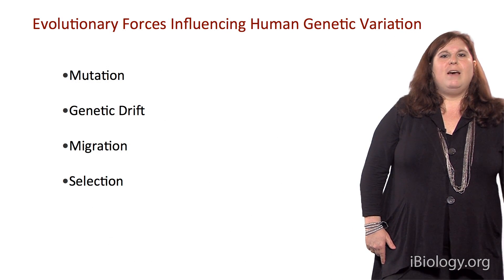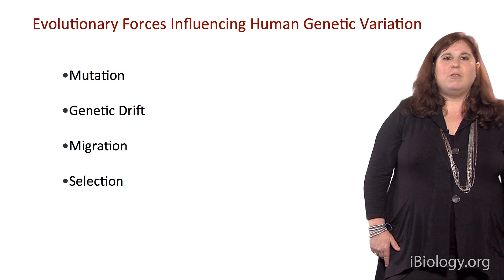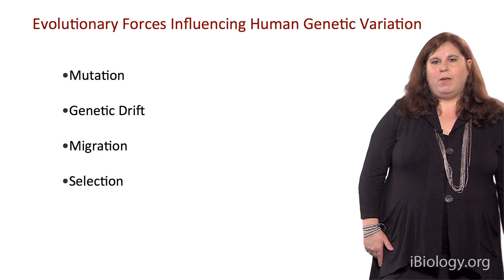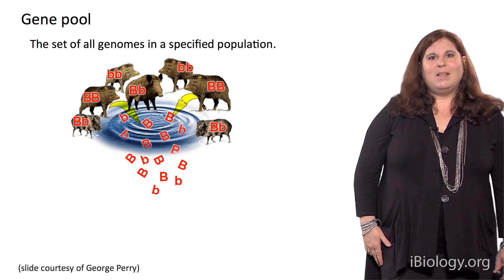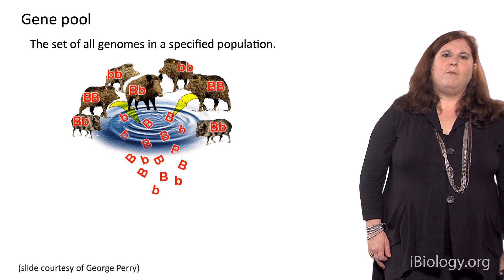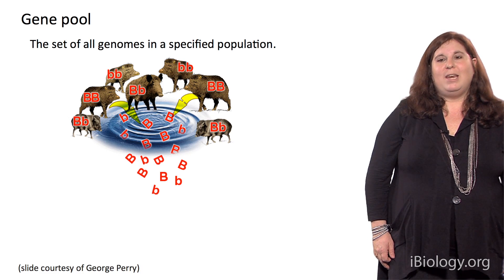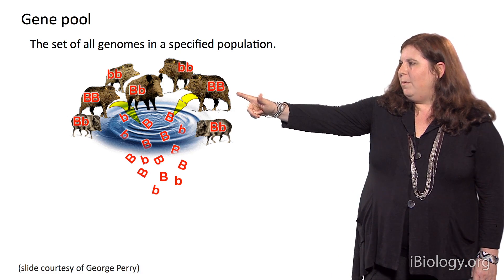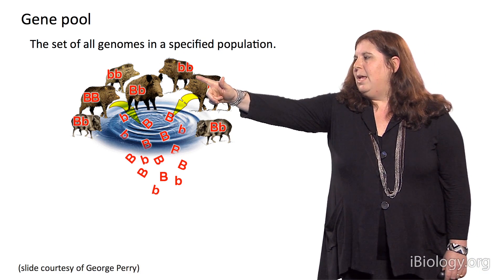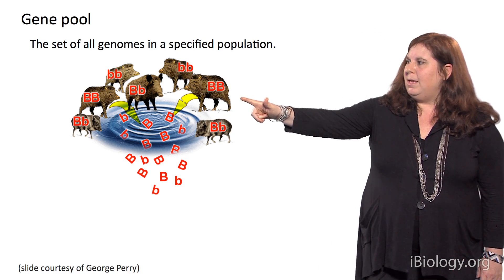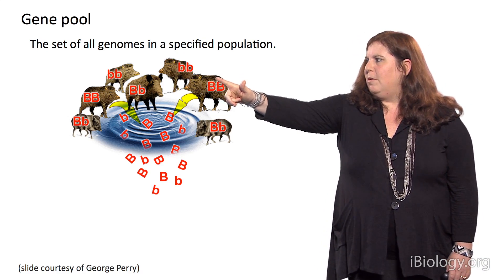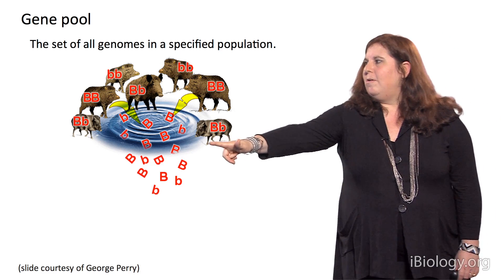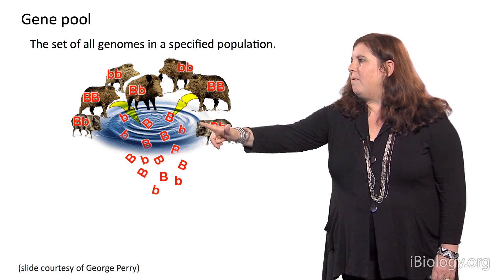Now I want to discuss the evolutionary forces that influence the patterns of genetic variation that we see today. These include mutation, genetic drift, migration, and natural selection. The gene pool refers to the set of all genomes in a specified population. Here we have an example using warthogs. At a single genetic locus we have two alleles, big B or little b — individuals can be homozygous for big B, homozygous for little b, or heterozygous. Together, the set of alleles in that population represents the gene pool.